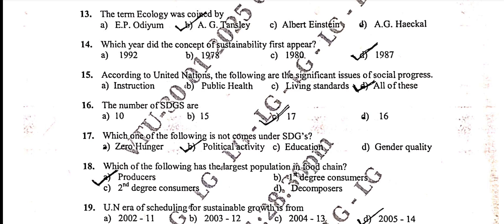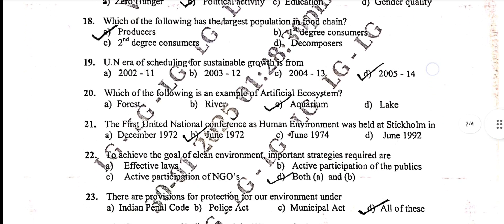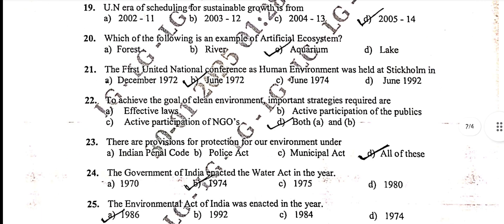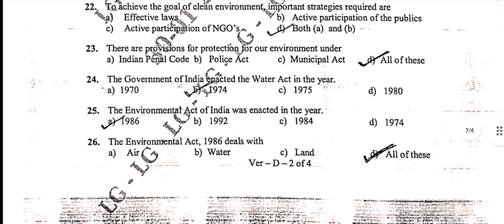Sixteenth: option C. Seventeenth: option B — political creativity. Eighteenth: option A — producer. Nineteenth: option D — 2005 to 2014. Twentieth: aquarium, option C. Twenty-first: June 1972, option B. Twenty-second: D — both A and B.